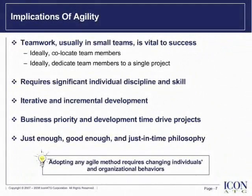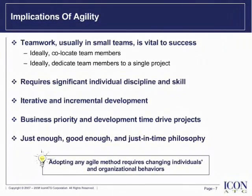So what are the implications of agility? First of all, teamwork, usually in small teams, is vital to success. Ideally, you'd like to have team members co-located and dedicated to a single project. Also, being agile requires significant individual discipline and skill. This point is so often overlooked. Agility requires a rather skilled and multi-disciplined team, and for many organizations this can be quite difficult because we've become extremely specialized in our skills over the last decade or so.